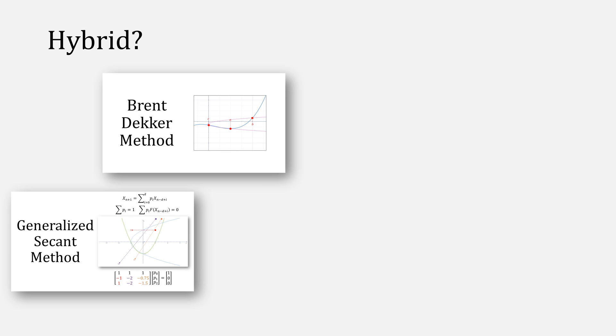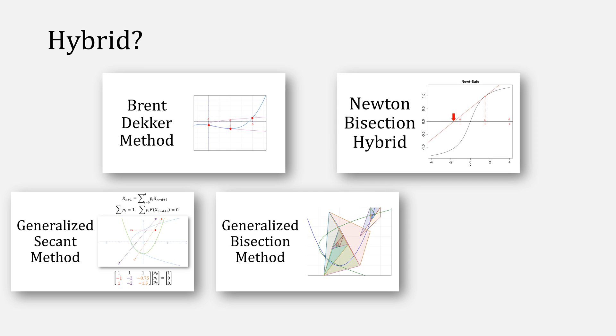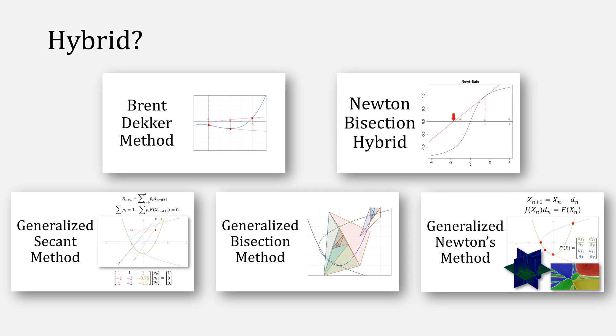Now you might be wondering what about a hybrid version similar to Brent-Dekker, in which you combine bisection with secant method. Well, you could imagine a generalized version of secant method combined with generalized bisection, which identifies areas and triangles, and if the secant step ever was outside of your triangle, you'd force a bisection. You could do something similar with a Newton-bisection hybrid, combining generalized Newton's method with generalized bisection.